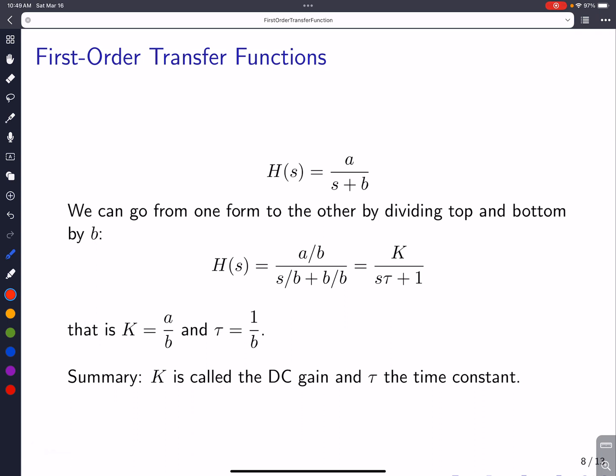Now, it's pretty easy to go from this form to the standard form. You essentially divide top and bottom by this term. So if you divide top and bottom by b, you end up with this. Of course, the b ends up as a one. And so you end up with this expression, which is the standard form. This means that the DC gain becomes a over b, and the time constant becomes 1 over b. K is called the DC gain and tau is the time constant.